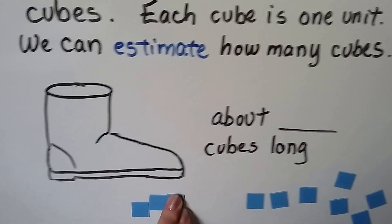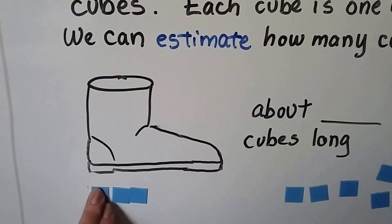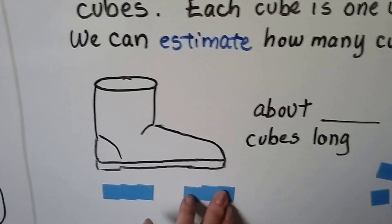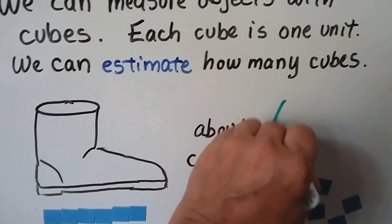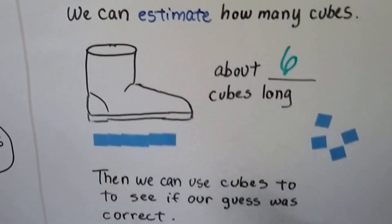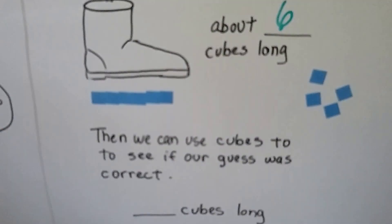Well, we put like six here? That's three, four, five, six. We estimated about six and then we use the cubes to see if our guess was correct.